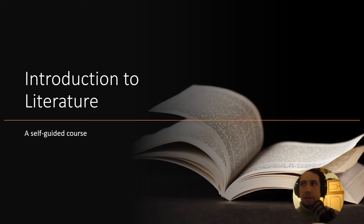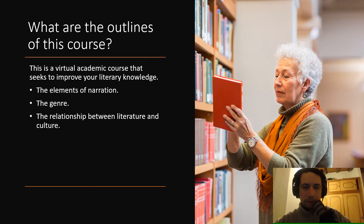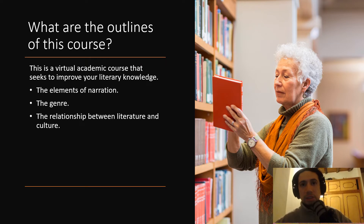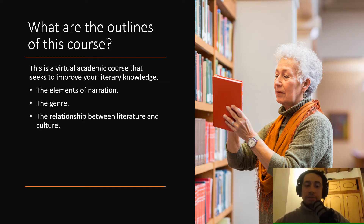Let's start with the outlines of this course. This course is divided into three units. The first one is called The Elements of Narration — we're going to see the very basics of literature and what a story is. Then we'll head on to Genre, where we'll discuss some of the most popular literary genres.